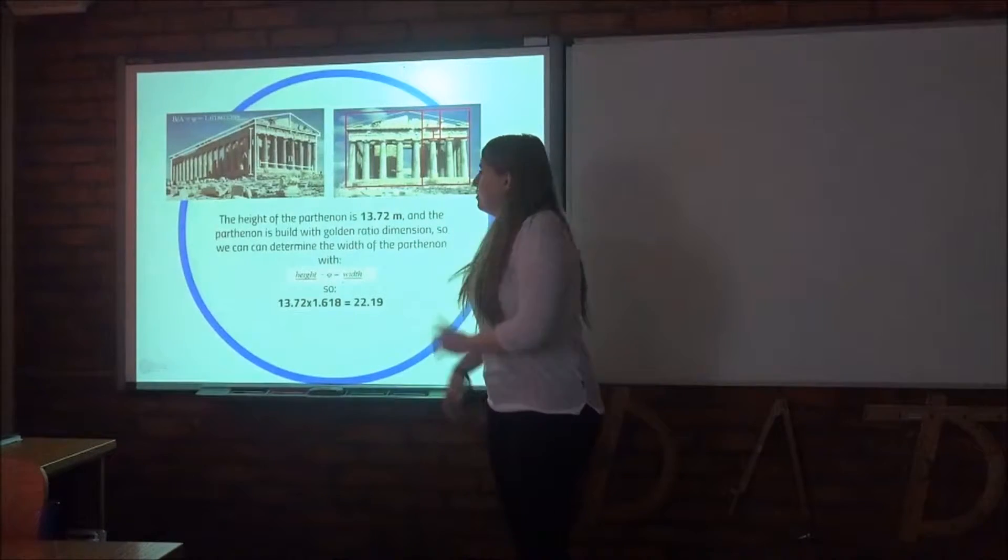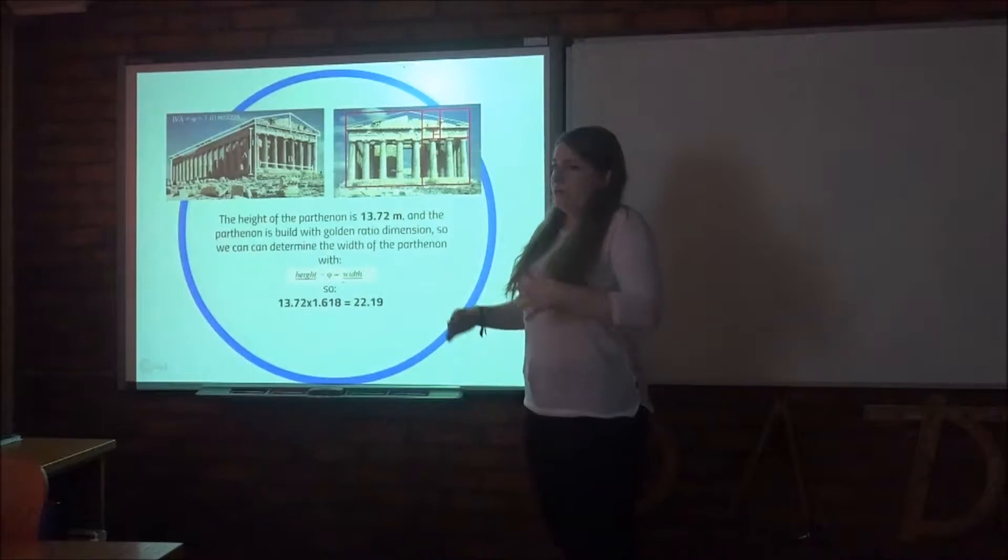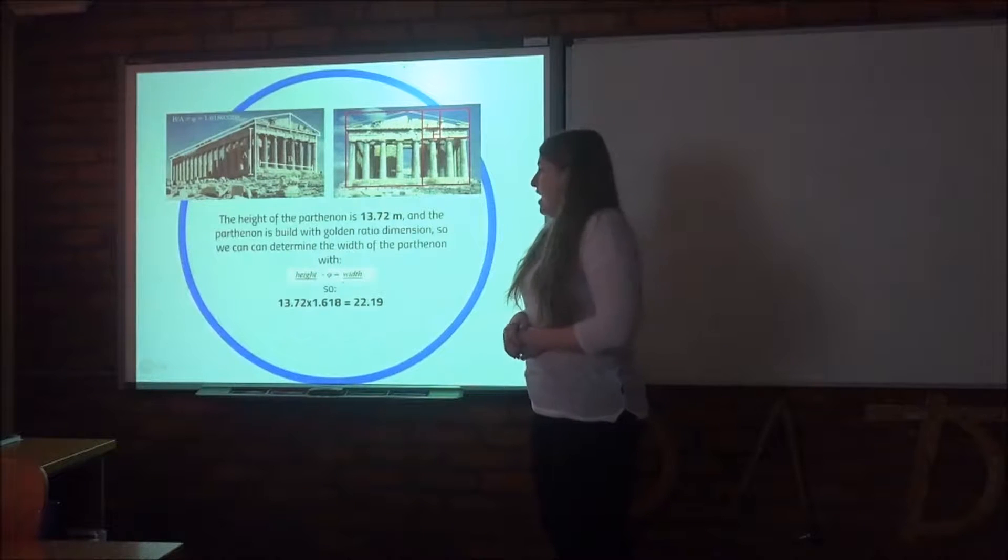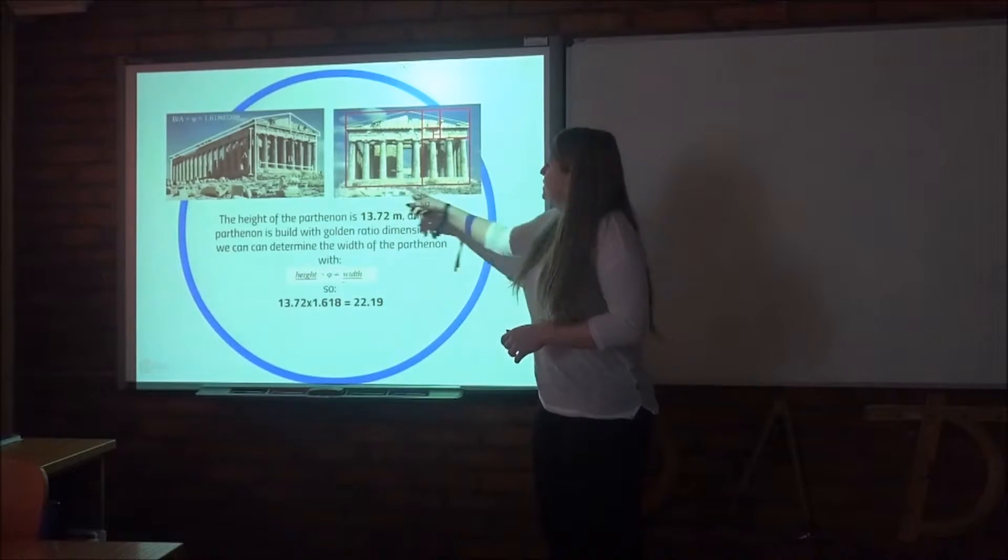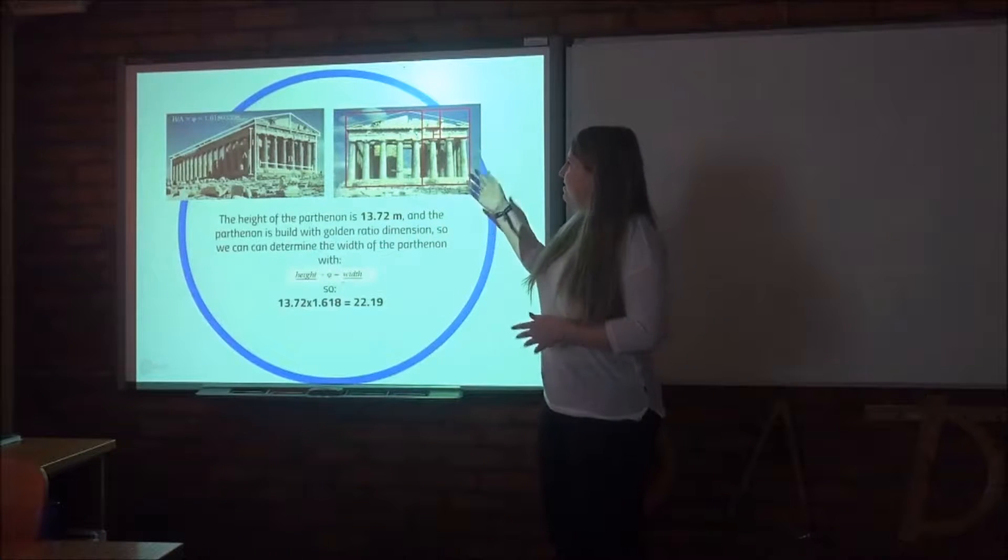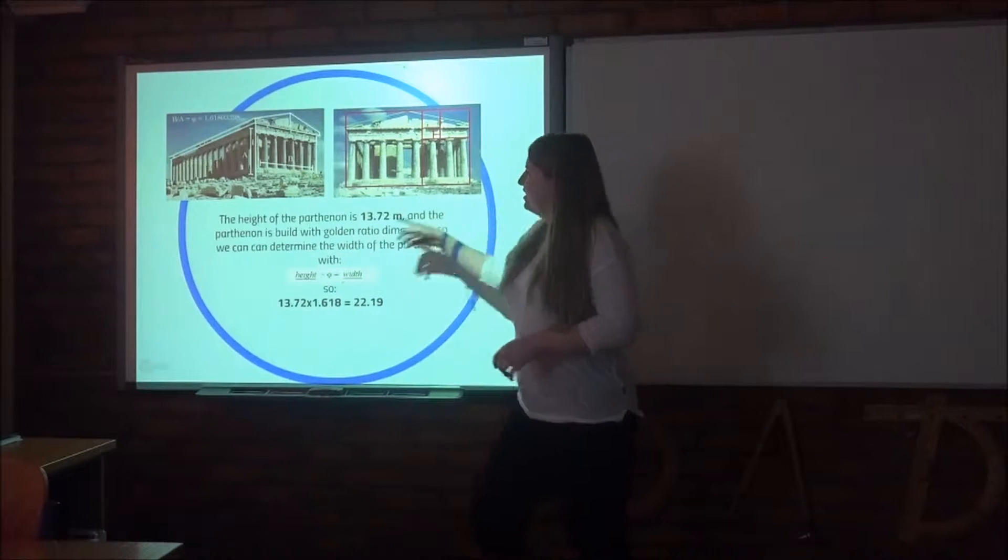We will start with the Parthenon, and as we all know it's an ancient building. And here you can see that here is the golden proportion and it's kind of easier here and also here.